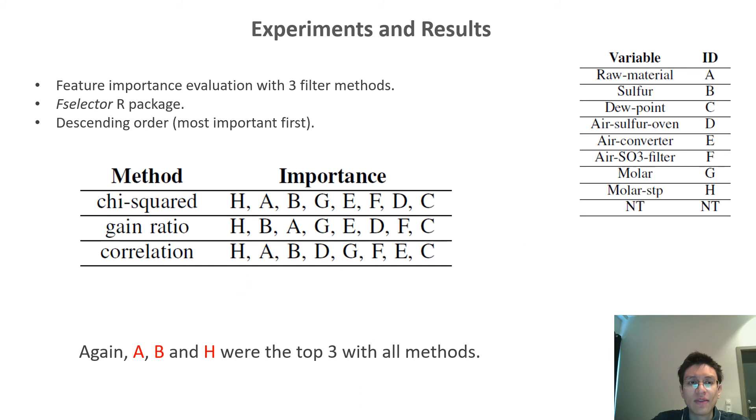Next we evaluated feature importance using three filter methods, including chi-squared, information ratio and correlation. Filter methods evaluate the importance of each variable independently of the others and with respect to an output variable. In this case the output variable is the NT number.